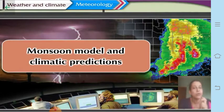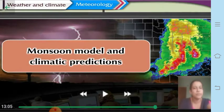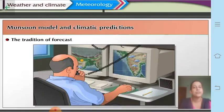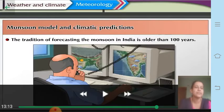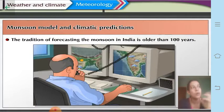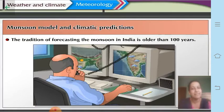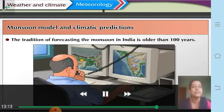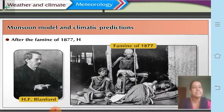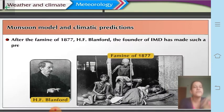Let us now study about monsoon models, upon which climatic predictions are based. The tradition of forecasting the monsoon in India is older than 100 years. Old people, by looking at the sky, could tell what the weather would be like. So forecasting has been done in India for more than 100 years, even before modern models were developed.